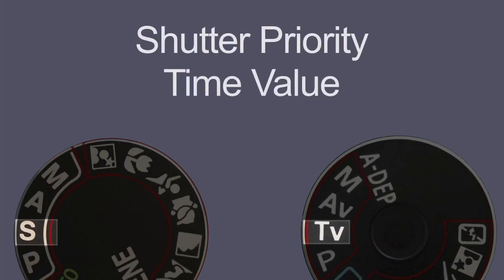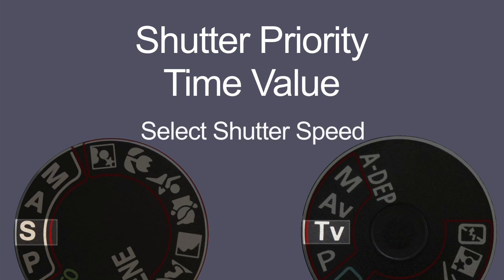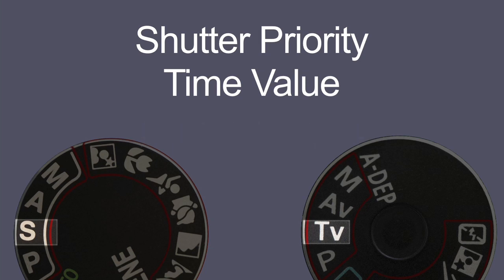In shutter priority mode, this is very useful for using flash, particularly when using flash outdoors on a sunny day. In those conditions, it's very difficult to get the right exposure in aperture priority mode. So if you're using flash outdoors on a sunny day, I would strongly recommend using shutter priority mode and choosing a fast shutter speed, such as 1/250th of a second. This is the sync speed of most cameras.